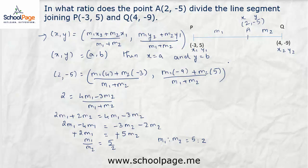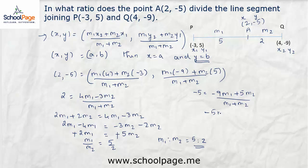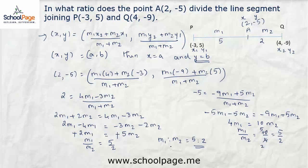Hence, the ratio in which the point A divides the line segment joining P and Q is 5 is to 2. We can verify using the y-coordinate: since y = b, we equate −5 = (−9M1 + 5M2) / (M1 + M2). Solving: −5M1 − 5M2 = −9M1 + 5M2, giving 4M1 = 10M2, so M1/M2 = 10/4 = 5/2, or M1 : M2 = 5 : 2. We can equate either the x or y coordinate and the ratio will be the same.